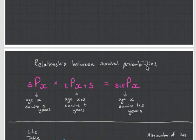What it's basically saying is the probability of someone surviving from, let's say, age 10 until they are 16 is equal to the probability that someone aged 10 survives to age 15, and then from 15 survives to age 16. So we can see that survival probabilities can be broken up this way.